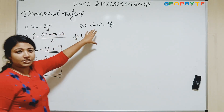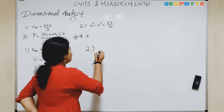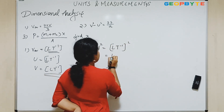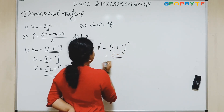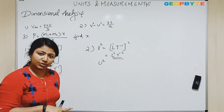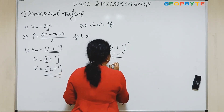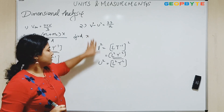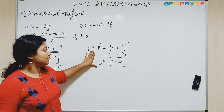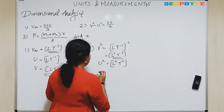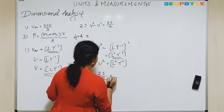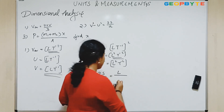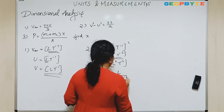So the first equation is dimensionally consistent. Now we will check the second equation: V squared. V is the velocity, that is L T to the power minus 1, squared — that is equal to L squared T to the power minus 2. U squared is the initial velocity squared, it will also give the same result: L squared T to the power minus 2. This is the left-hand side. Now we have to check whether this is consistent with the right-hand side, that is 2 S A. S is the displacement, that is L. And A is the acceleration, that is L T to the power minus 2.